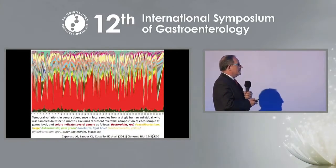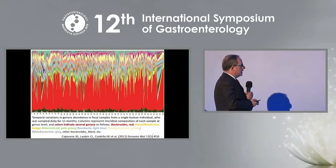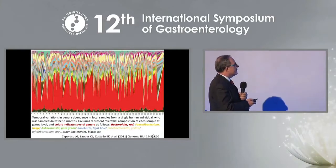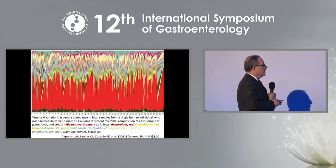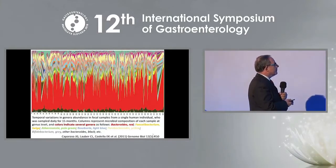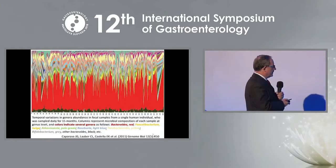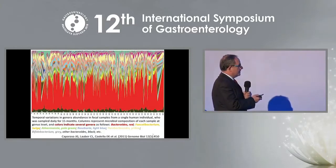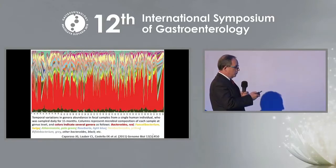This slide shows temporal variations in general abundance in fecal samples from a single human individual who was sampled daily for 15 months. The colors indicate several genera — for example, red is Bacteroides, Faecalibacterium is birch, and so on.